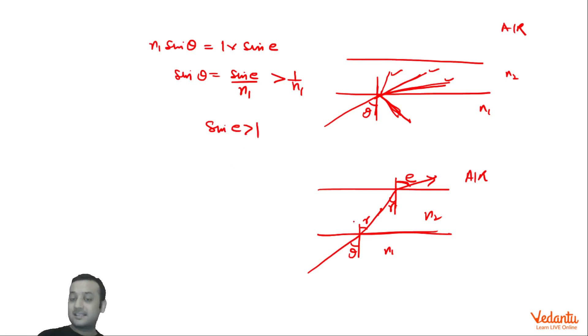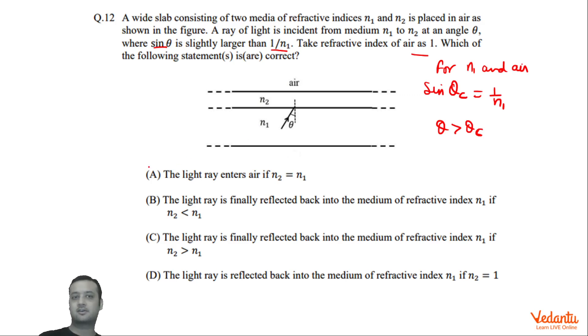Hence, you can see that irrespective of the value of R, sin E is becoming greater than 1 if we assume the ray goes into air. Hence, it's not possible that it goes into air. So either TIR will happen here, or if not here then definitely TIR will happen at this interface. I hope you would have understood. Beautiful solution.